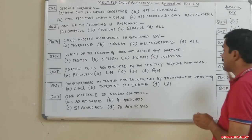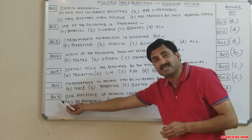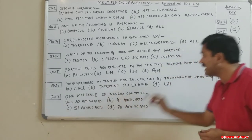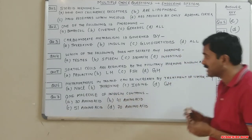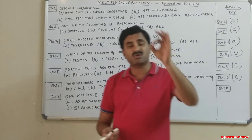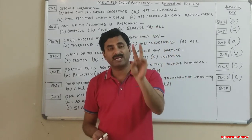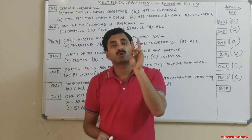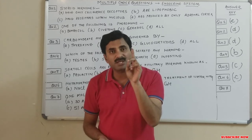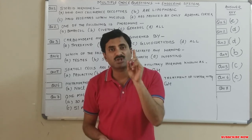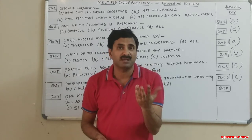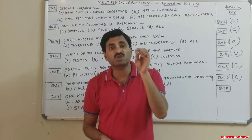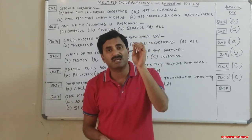Question seven: one molecule of insulin contains how many amino acids — 30, 41, 51, or 70? The insulin molecule has two chains: chain A and chain B, also called alpha and beta chains.